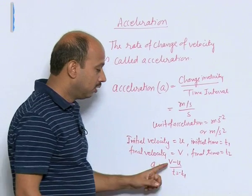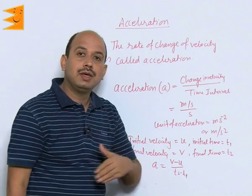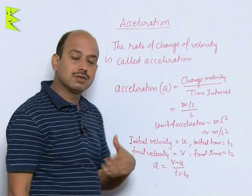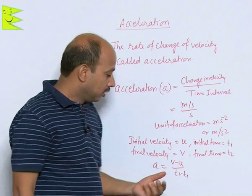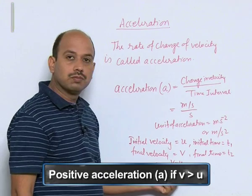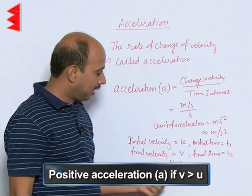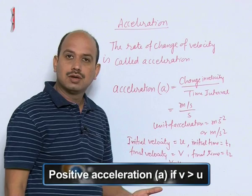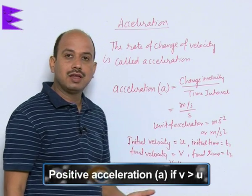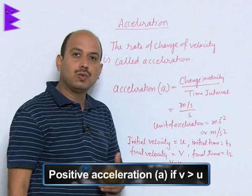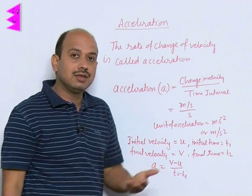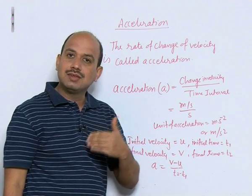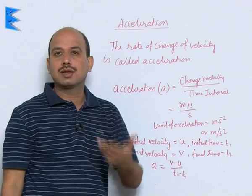Final velocity may be greater than initial velocity — it is not necessary that it is less. So if v is greater than u, the value of a will be positive. This is called positive acceleration, which means velocity or speed is increasing with time.